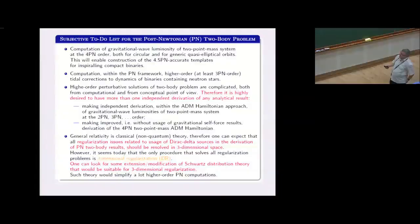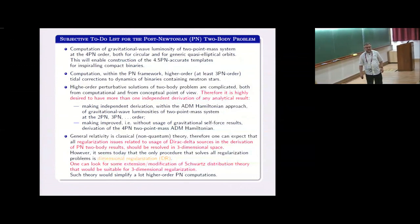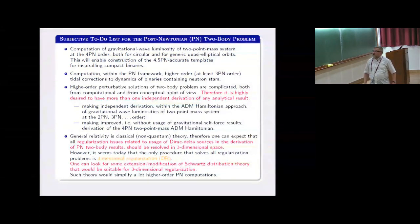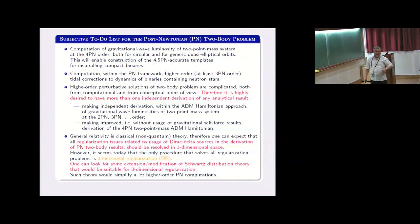I decided to start from the conclusion and then make some historical remarks. This is subjective, strongly personally biased, for the post-Newtonian two-body problem. It's very important to compute 4.5 post-Newtonian gravitational wave luminosity for two-point mass systems because then it will be possible to construct more accurate templates for inspiring compact binaries, which can be used in analysis of data collected by gravitational wave detectors.